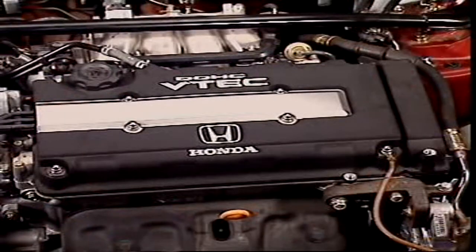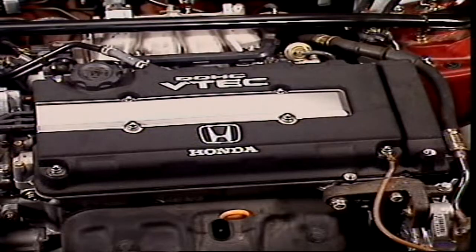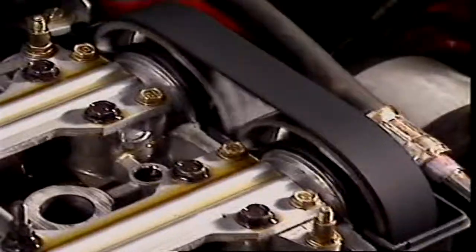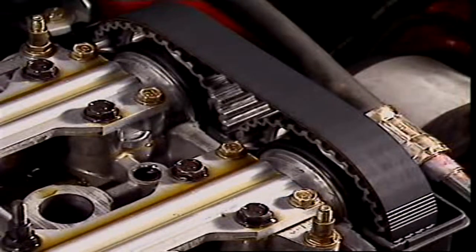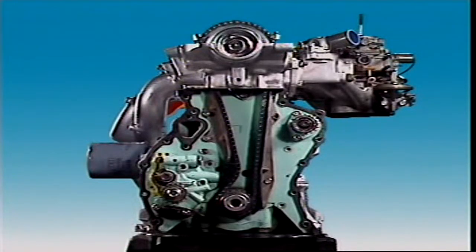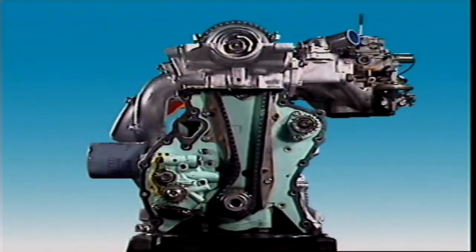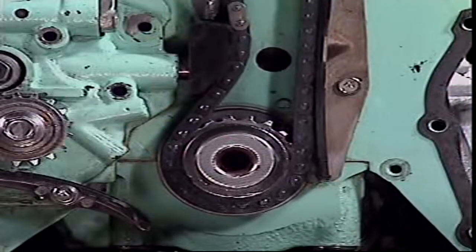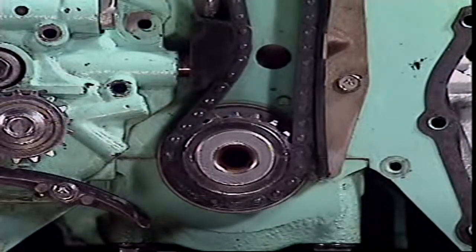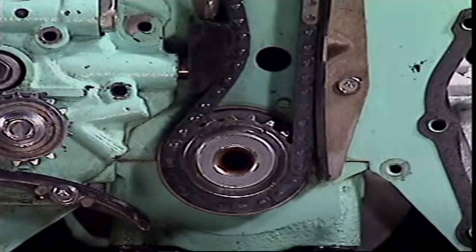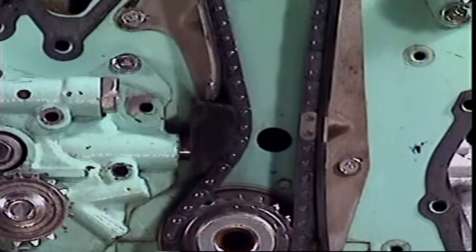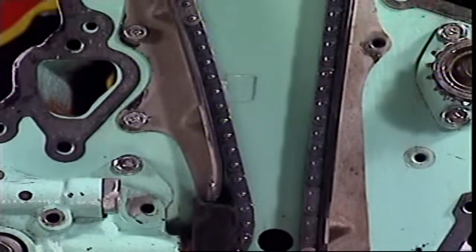Timing belts and chains are used on overhead camshaft engines because the camshaft is further from the crankshaft. This is a typical chain drive system. It uses a hydraulic tensioner which is fed by oil under pressure from the lubrication system. The chain also uses guides to reduce noise and vibration.